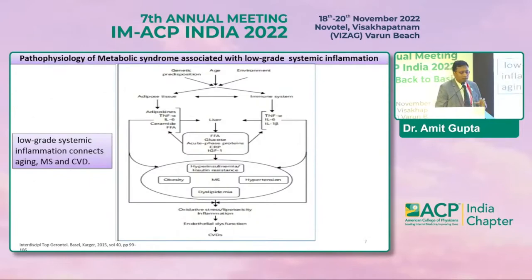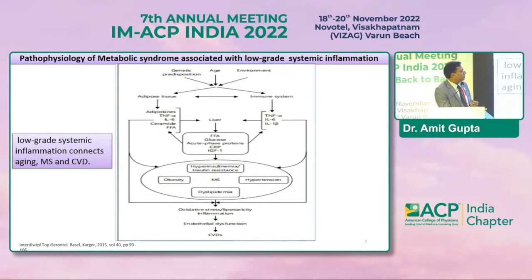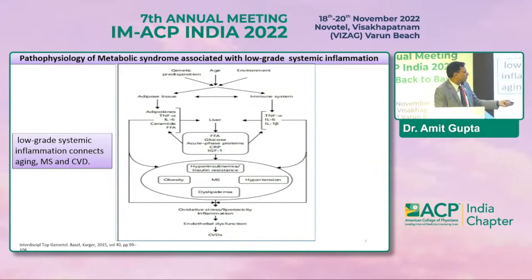Genetic predisposition may make someone more susceptible to inflammation, while age is also a contributing factor and the environment can also trigger it — for example, COVID-19 came to people from the environment itself. This leads to changes in the adipose tissue as well as the immune system, generation of all the inflammatory markers, changes in metabolism, and ultimately causing hyperglycemia, dyslipidemia, obesity, hypertension, various cardiometabolic disorders, and cardiovascular disease.